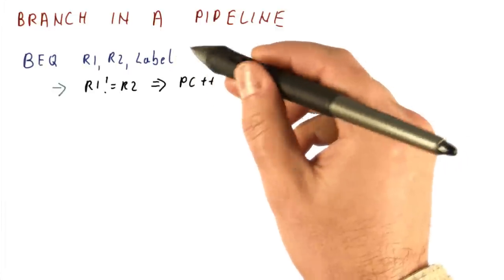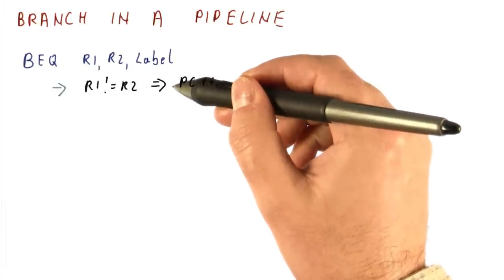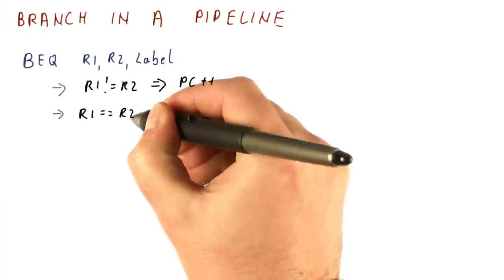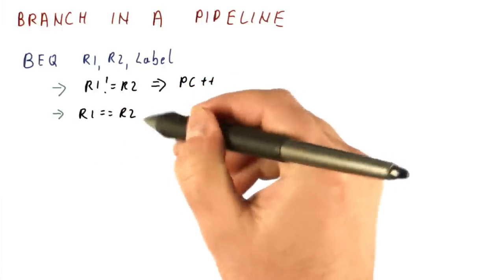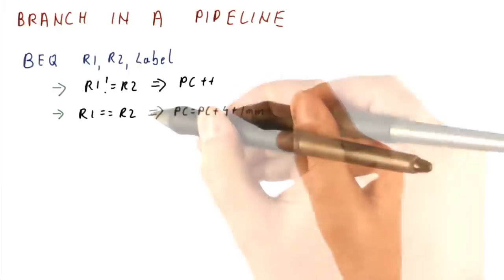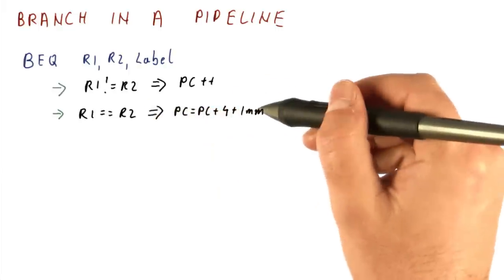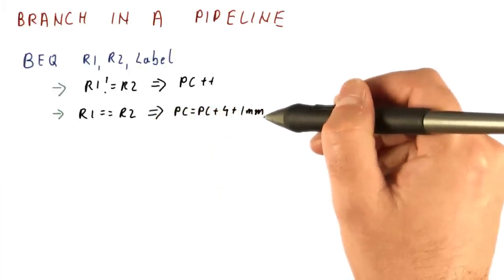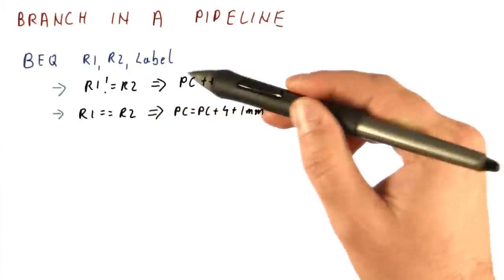For example, if the size of the branch instruction is four, then the PC will just move by four bytes. However, if the branch condition is satisfied, in this case if R2 and R1 are equal, then the branch will increment the PC and also add the immediate to it. So the next instruction we fetch will be at this label.